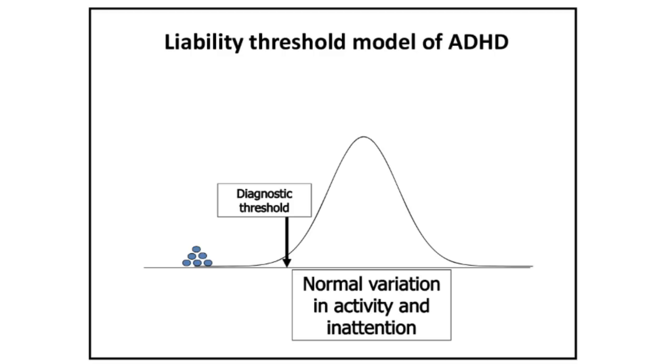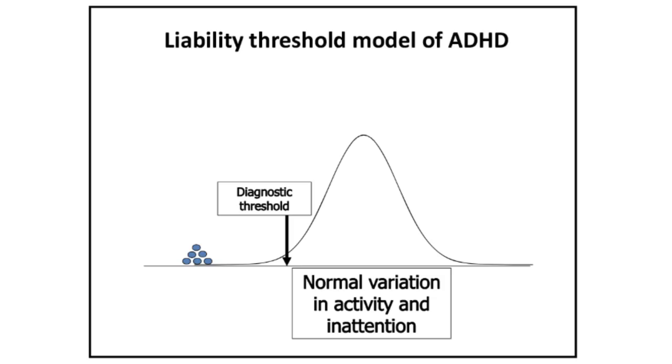Overall, what these studies tell us is that ADHD is a continuous trait, making it somewhat arbitrary where we draw the diagnostic line. That's why the impairment criterion as well as severity of symptoms is so important. There are probably unique causes of ADHD — severe early deprivation, copy number variants — which appear to be major causes in some individuals. But for the majority, they represent the tail of this normal distribution.